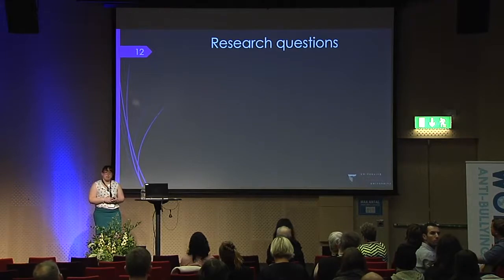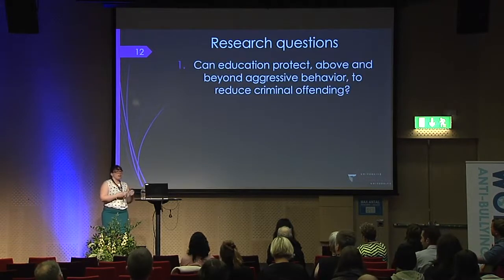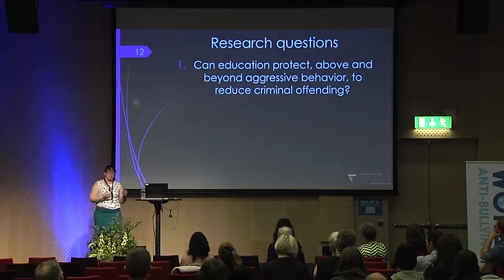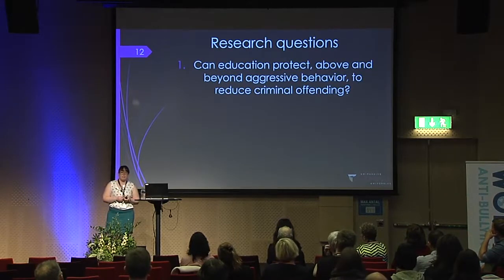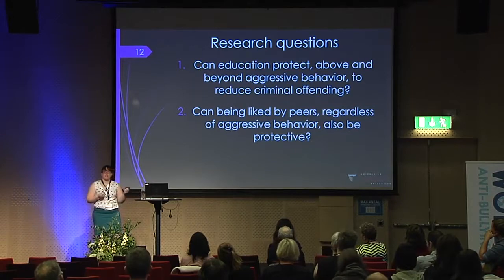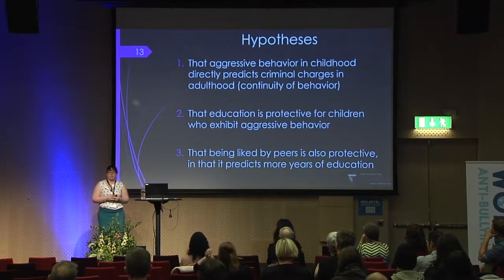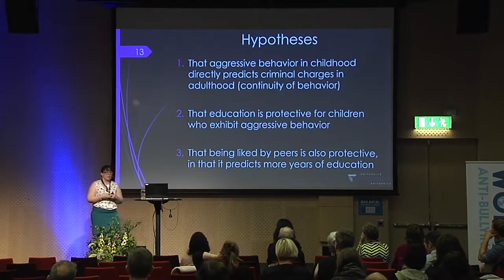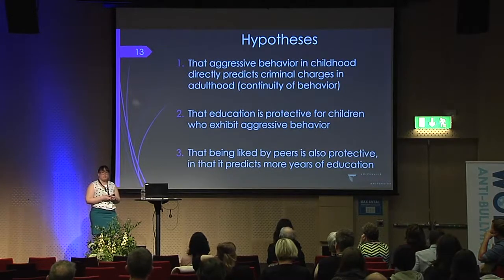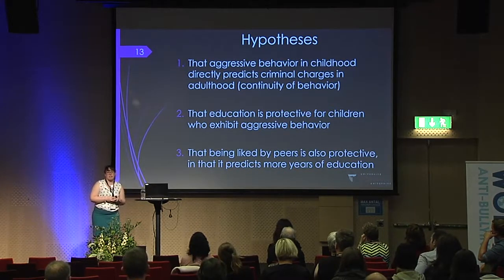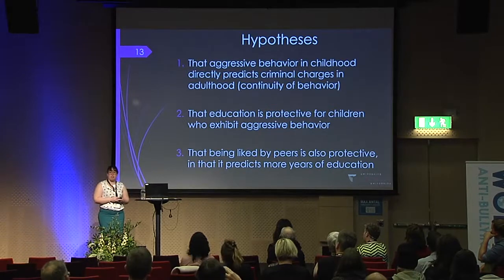My two research questions were: can education protect above and beyond aggressive behaviour to reduce criminal offending? And can being liked by peers, regardless of aggressive behaviour, also be protective for these children? My hypotheses were: first, continuity of behaviour — aggressive behaviour in childhood directly predicts criminal charges in adulthood; second, education would be protective for aggressive children; third, being liked by peers is protective in that it predicts more years of education.